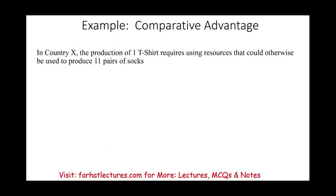Assume in Country X, producing one t-shirt requires resources that could otherwise be used to produce 11 pairs of socks. So Country X has two options: produce one t-shirt and give up 11 pairs of socks, or produce 11 pairs of socks and forgo the t-shirt.